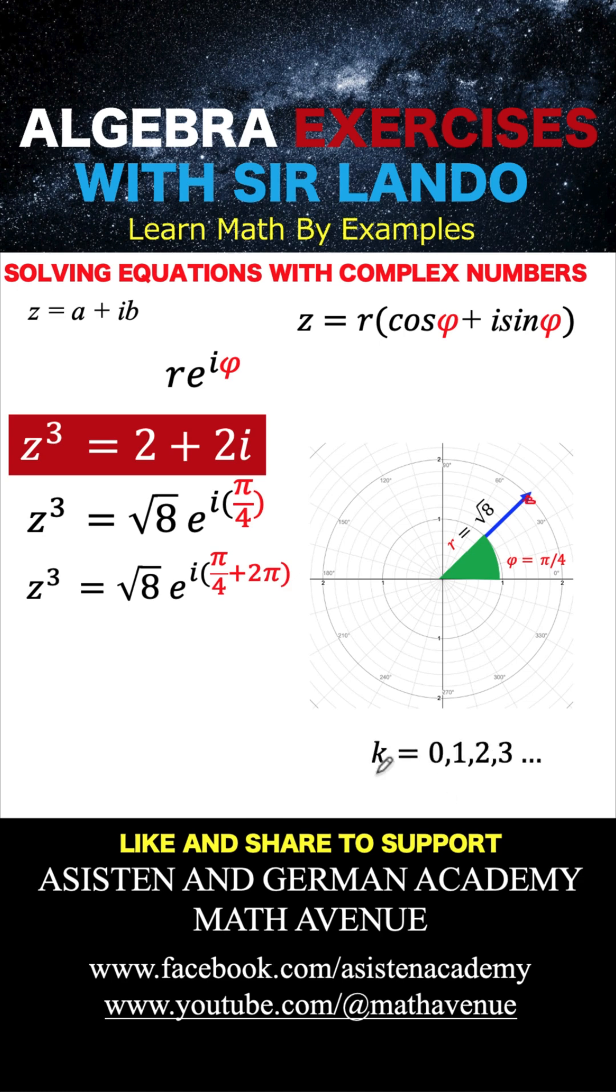Or if I have a number k, such that k is equal to 0, 1, 2, 3, and so on, then I can write the general form of the equation this way. z cubed is equal to the square root of 8 e raised to i times pi over 4 plus 2 pi times k. In other words, I am going to add multiples of 2 pi in order to arrive at the same point when I rotate around the circle.